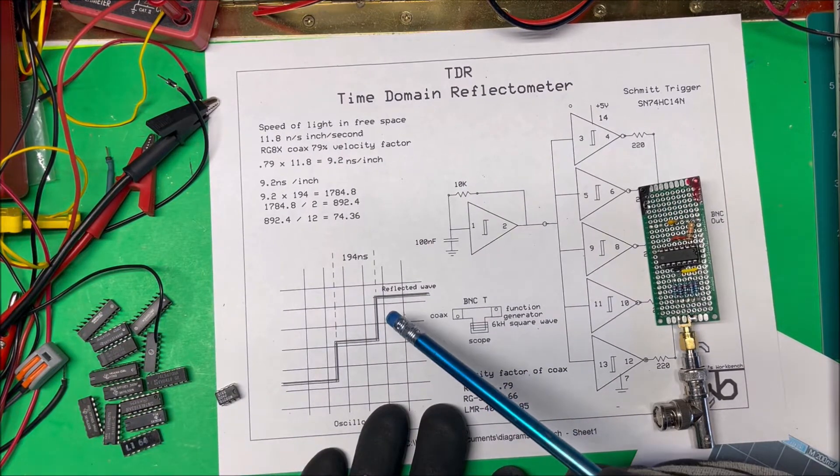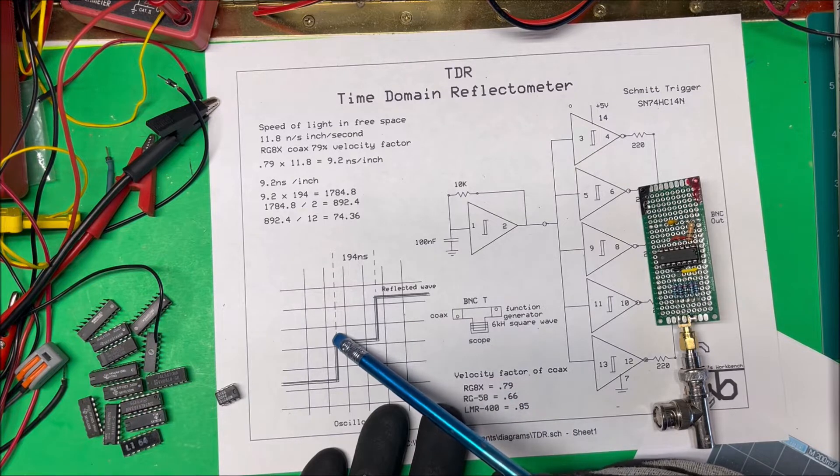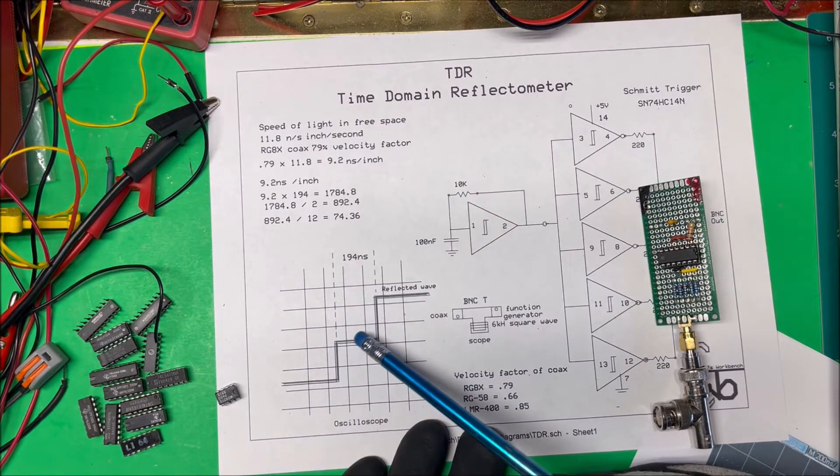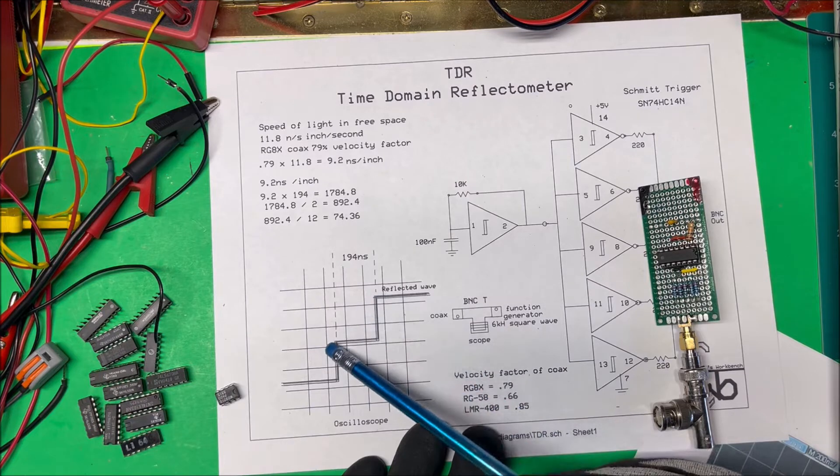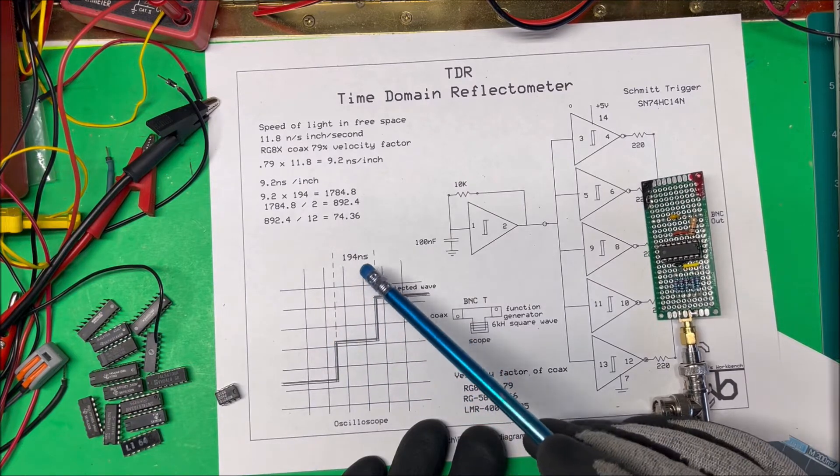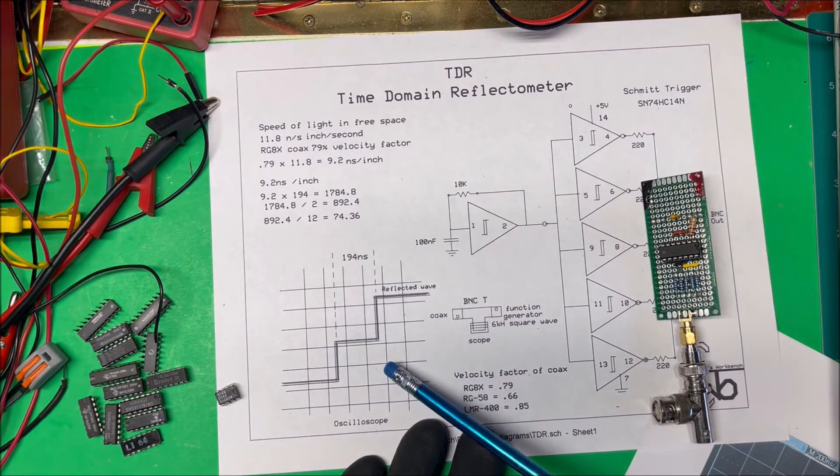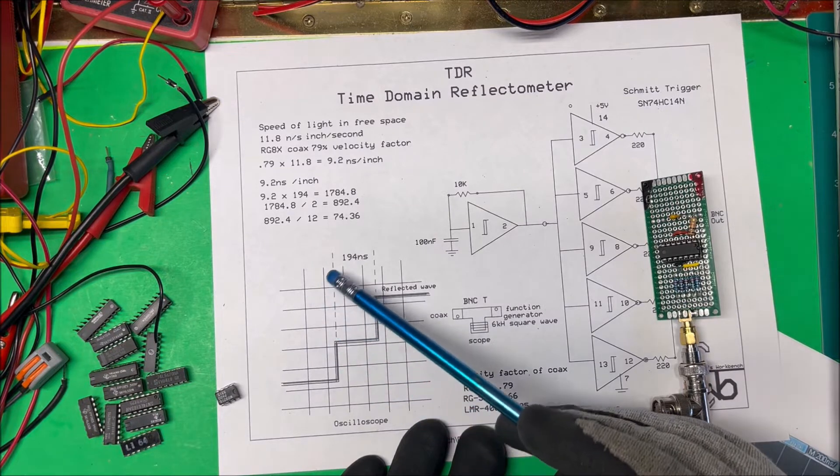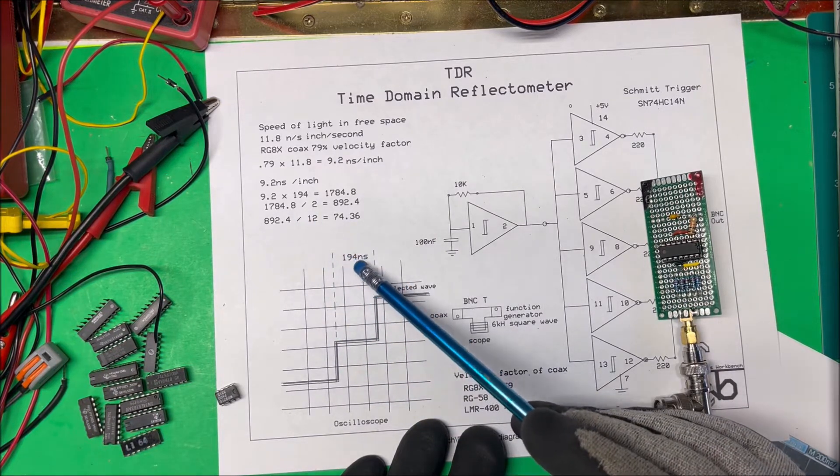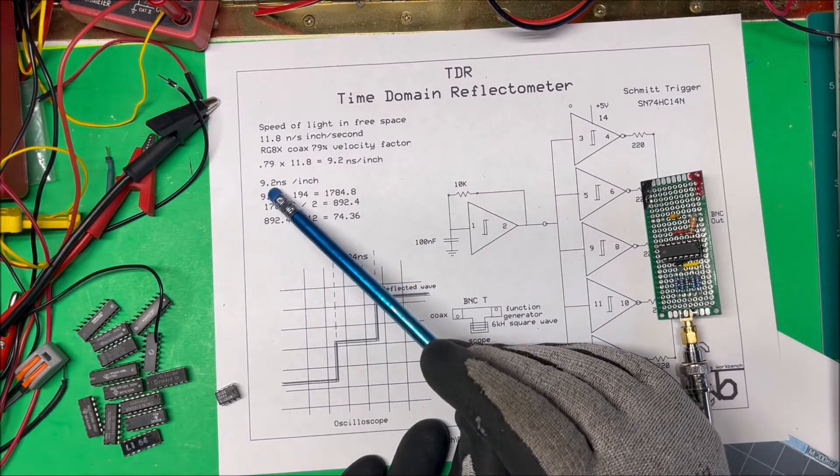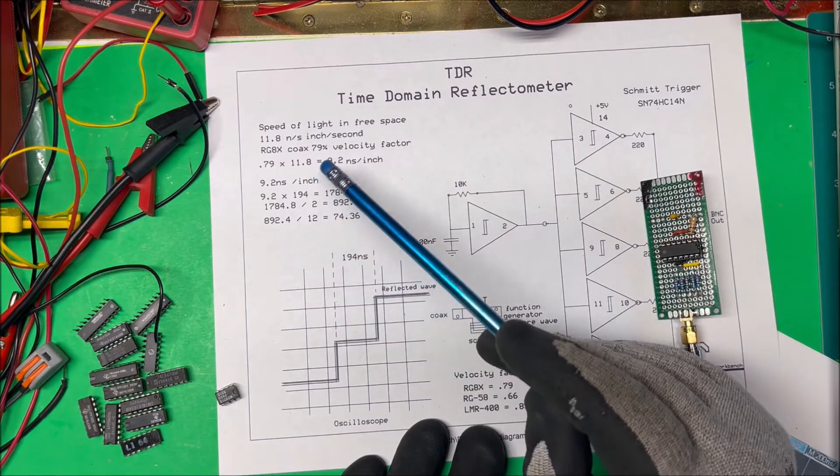Okay, so now we just take the, on the scope, we can tell the time difference between these two and it, in this case, it happens to be 194 nanoseconds. And if we take the 194 times our 9.2 nanoseconds per inch.